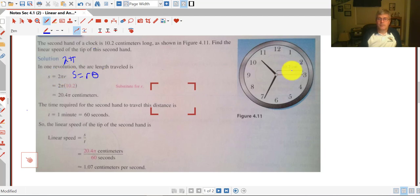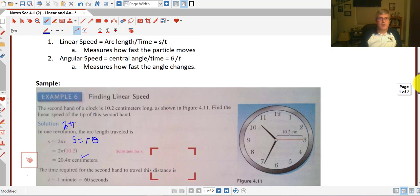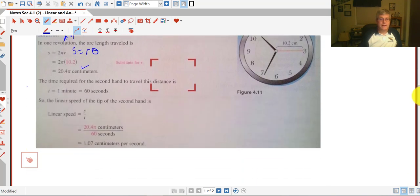Our r, based on our diagram, the radius or the length of our second hand is 10.2. s is 2 pi times 10.2 or 20.4 centimeters. But we still need to plug this into our formula of s over t. So our linear speed, s over t. We figured out our s was 20.4 from above.